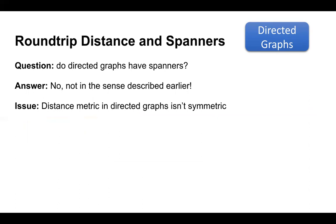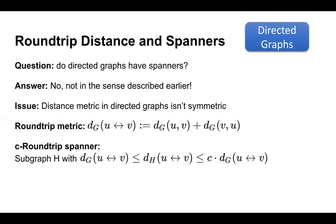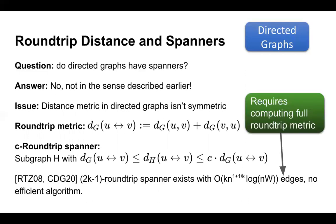To get around this, we can define the round trip metric. The round trip distance between two vertices u and v in a directed graph is the sum of distances from u to v and back from v to u. We can define a round trip spanner analogously as a subgraph H that maintains all round trip distances up to a factor of c. It's known that 2k−1 round trip spanners exist with n^(1+1/k) edges, up to extra factors of k and logarithmic in n and maximum weight. Unfortunately, no efficient algorithms are known because they require computing the full round trip metric.